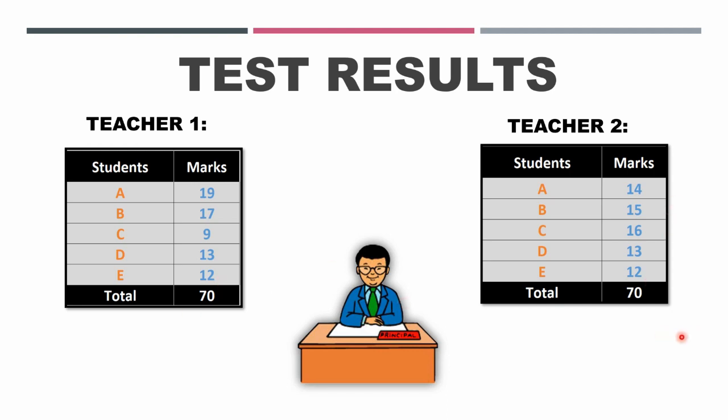Now when the principal sums these marks up, he noticed that the total is 70 and so the mean of both the teachers is coming out to be 14, and he is baffled by this result. Now what to do? How to hire?